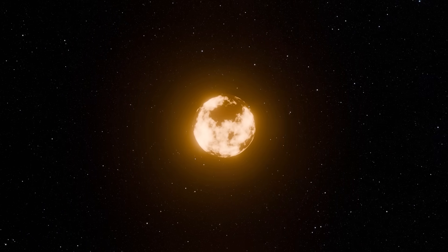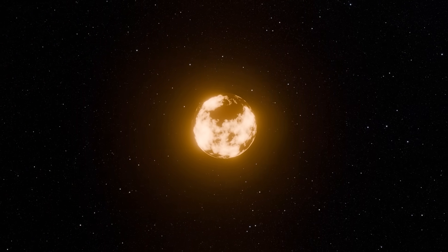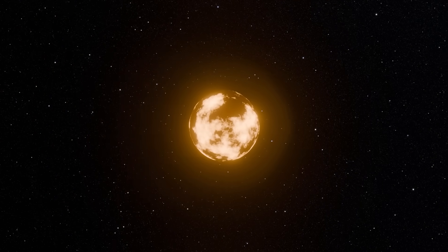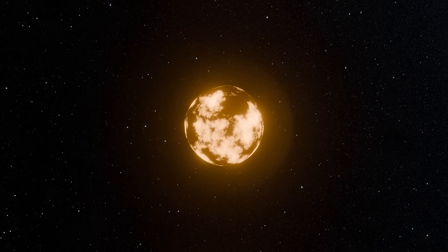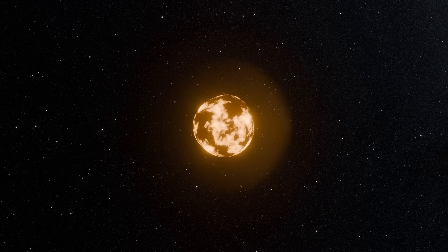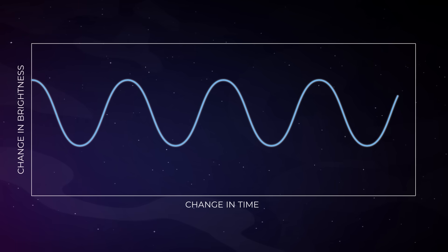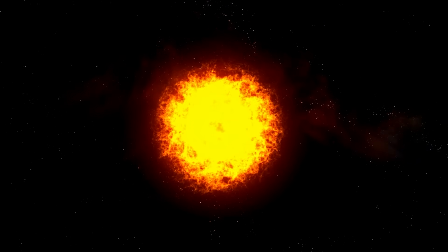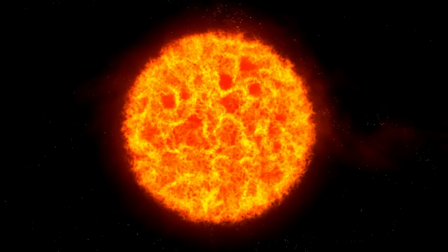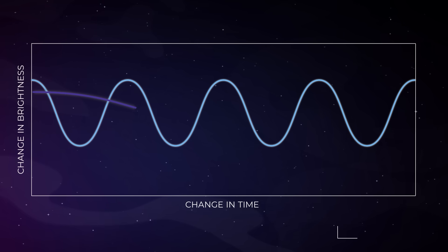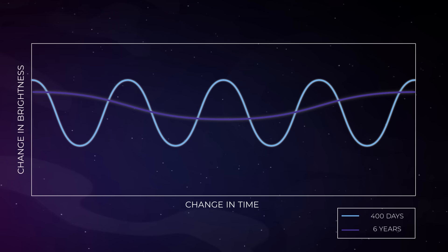Betelgeuse is a bit of a rhythmic breather. It pulsates, meaning its outer layers regularly expand and contract like a slow-motion heartbeat. But here's where it gets interesting. It doesn't have just one rhythm. It has multiple overlapping cycles. The first is the main pulsation cycle of 400 days. Roughly every 400 days, the star slowly swells and shrinks. This is due to changes in pressure and temperature in its outer layers, causing it to brighten and dim slightly over time. But there's another, much slower cycle, one that's far more puzzling. About every six years, Betelgeuse gradually brightens and dims again, though much more subtly. And despite decades of observations, no one knows exactly what causes this longer rhythm.